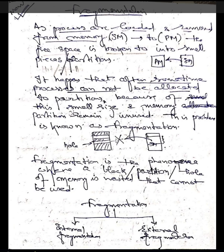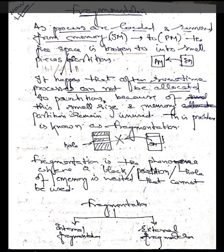When a process is moved from one location to another, the occupied portion is known as a heap — meaning the data has arrived. If the data is moved out and that space is created, it is known as a hole. Heap indicates data retrieval and hole indicates data moving out. Fragmentation is the phenomenon where a block, partition, or hole of memory is wasted and cannot be used.